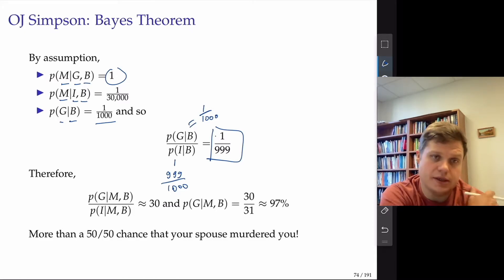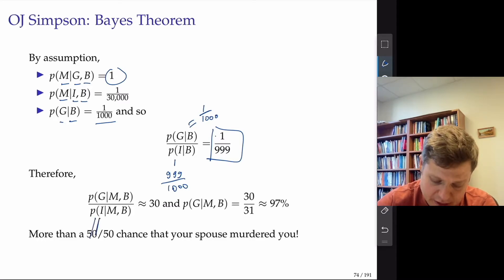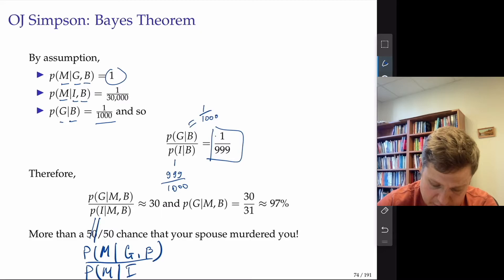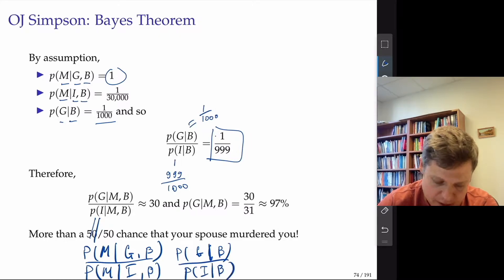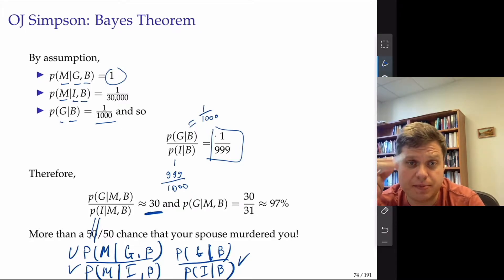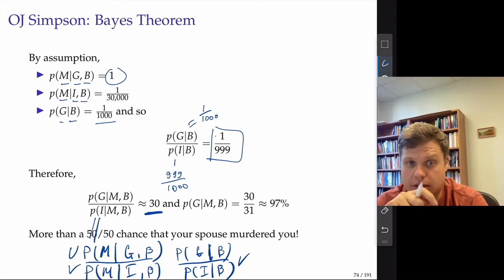Now we calculate the posterior odds: probability of guilty given the murder and the batterer, divided by probability of innocent given murder and the batterer. The posterior odds are the probability of murder given he is guilty and a batterer, divided by the probability of murder given he is innocent and a batterer, times the prior odds. If you plug in the numbers, the ratio comes out to around 30. So the probability of guilty given that the person murdered his wife and is known to be a batterer is 30 divided by 31.